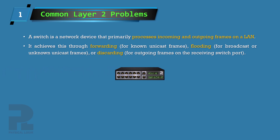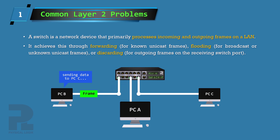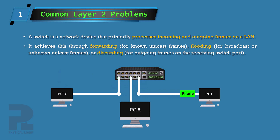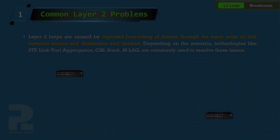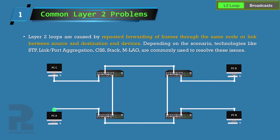The switch, as we have seen in the previous video, is a network device primarily designed to process incoming and outgoing frames on a LAN. As much as it is an intelligent device, it may also cause known problems on the network. One of such problems is a layer 2 loop, which happens when a frame traverses the same node or link more than once as it is sent to a destination device.